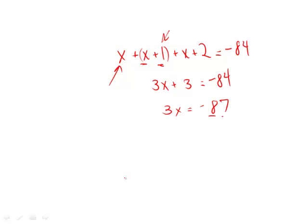Do not despair. These numbers can be divided by 3. 8 plus 7 is 15, so just divide by 3, and you're going to get x is equal to negative 29.